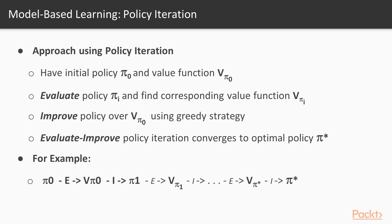We begin with an arbitrary policy pi sub zero, evaluate it to find its value function, then seek to improve it to pi sub one. We evaluate that to find its value function, and continue improving and evaluating until we eventually converge on pi star, the optimal policy.